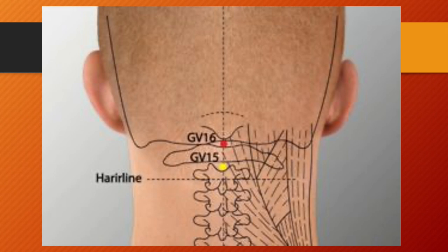GV16, Fengfu or wind palace, is located on the back of the neck, 1 tsun directly above the midpoint of the posterior hairline, directly below the external occipital protuberance, in the depression between the trapezius of both sides. It is the crossing point of the governing vessel and yang motility vessel, window of the sky point, and sea of marrow point. Functions: dispels wind, calms the shen, clears the head, benefits the head and neck. Needling: perpendicular or oblique insertion downward, 0.5 to 1 tsun. Do not puncture deeply — deeper is the medulla oblongata. Strict attention must be paid to needle angle and depth.